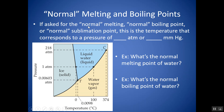If you ever see the term 'normal' — normal melting point, normal boiling point, or normal sublimation point — this is the temperature that corresponds to a pressure of 1 atm or 760 millimeters of mercury; these are the same pressure in different units. Here's the phase diagram for water. The normal melting point: go to 1 atm, find the line between solid and liquid, and drop down — it's 0 degrees Celsius. The normal boiling point: go to 1 atm, find the line between liquid and gas, and drop down — it's 100 degrees Celsius.